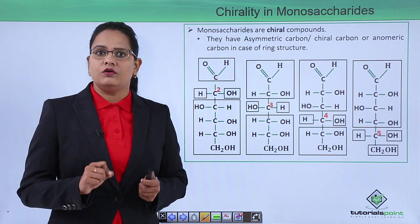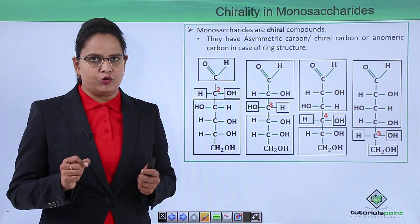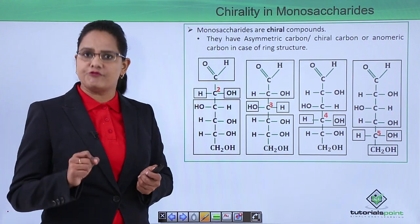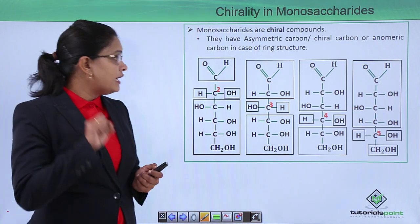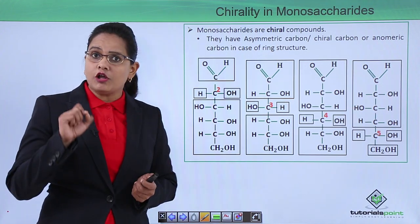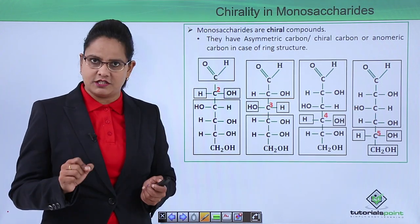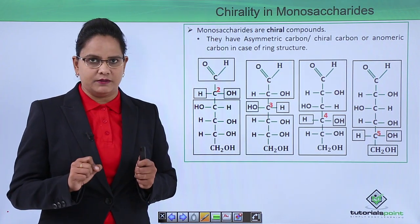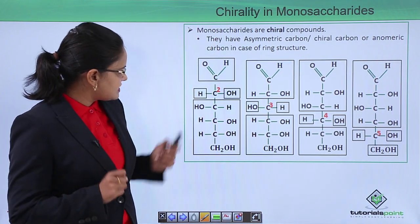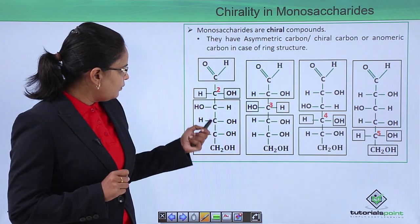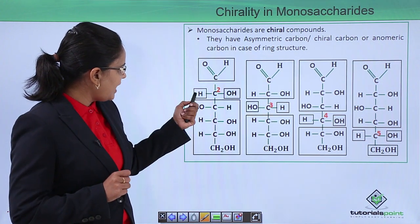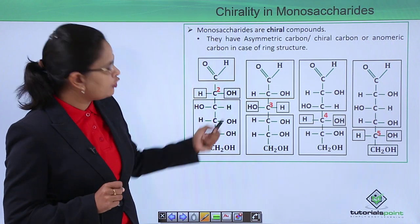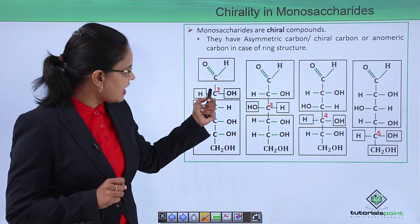We know that the valency of carbon is four, so on the four sides it has to be surrounded by four groups. If all these four groups are different, then the carbon is called asymmetric carbon. Here, the OH group, the H group, and the aldehyde group — all four groups are different. So this is a chiral carbon.